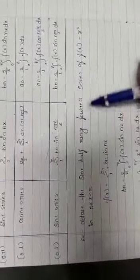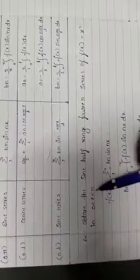I will take an example. In this example, obtain the sine half range Fourier series. The function is f(x) = x² where 0 is less than x and less than 5.